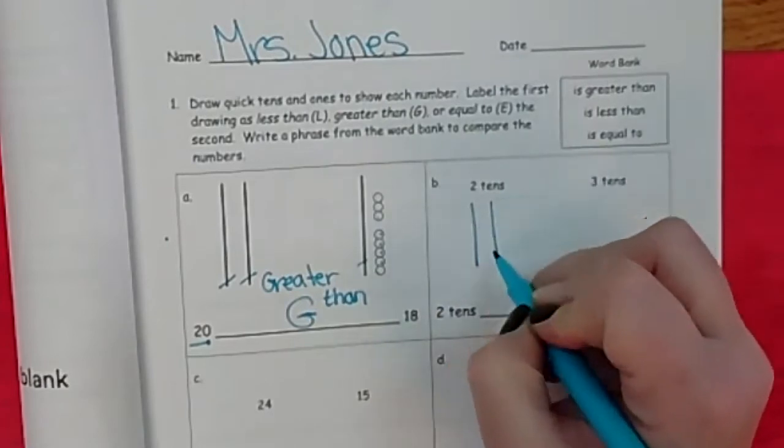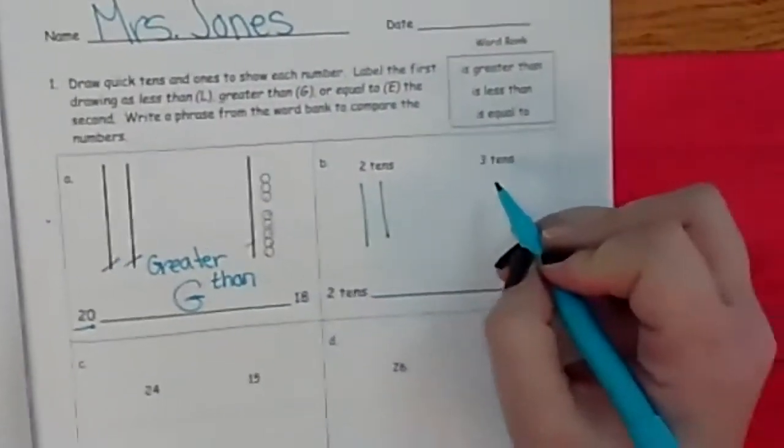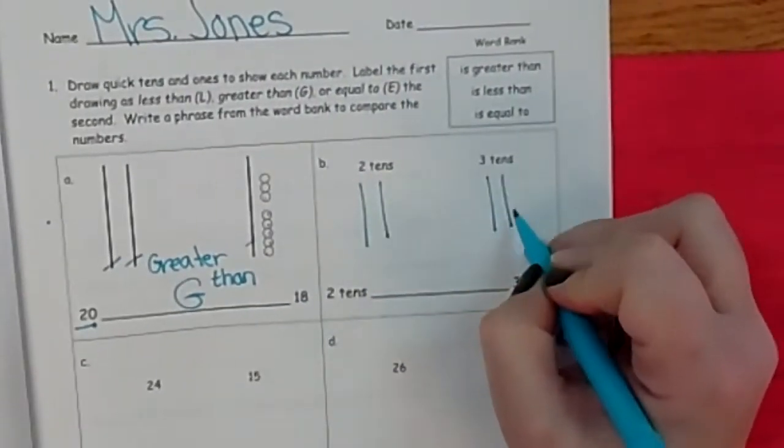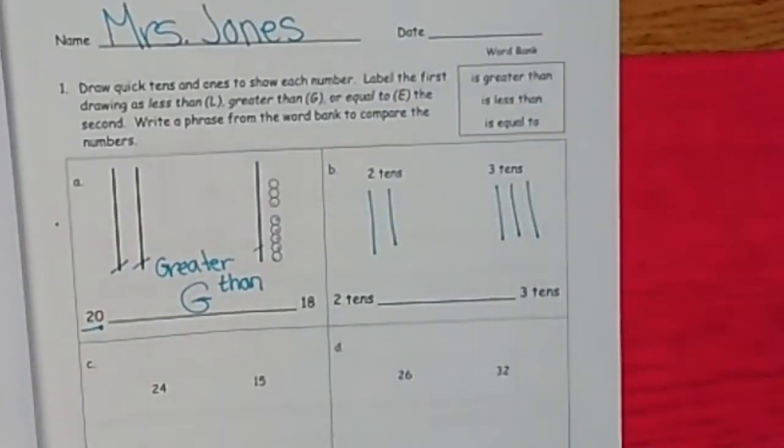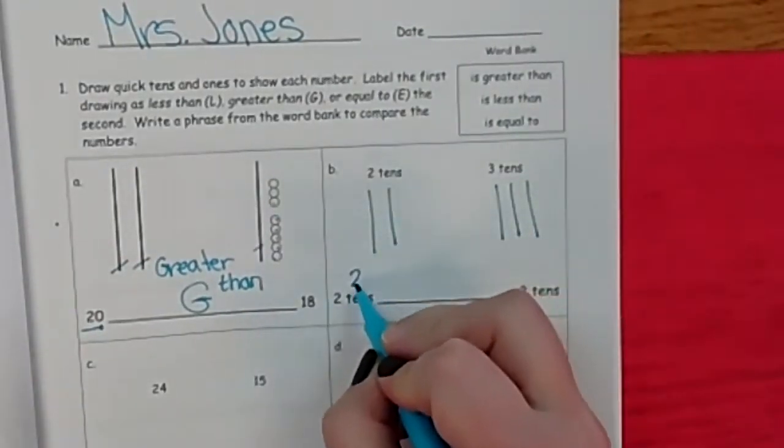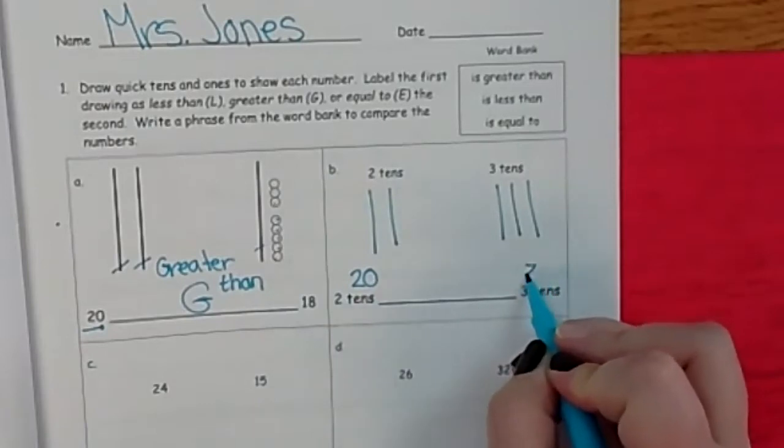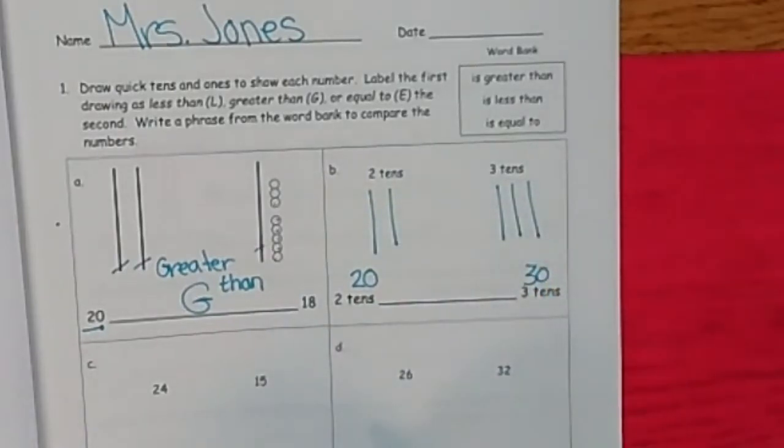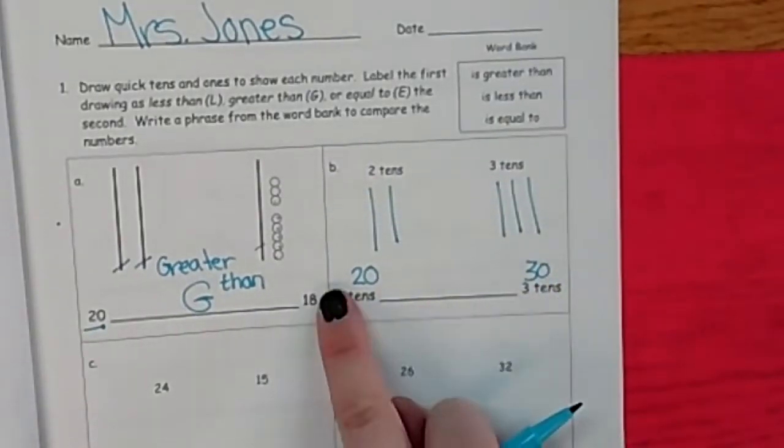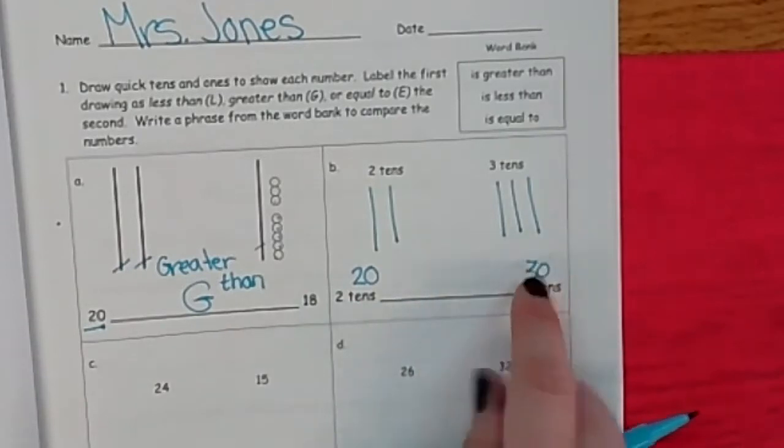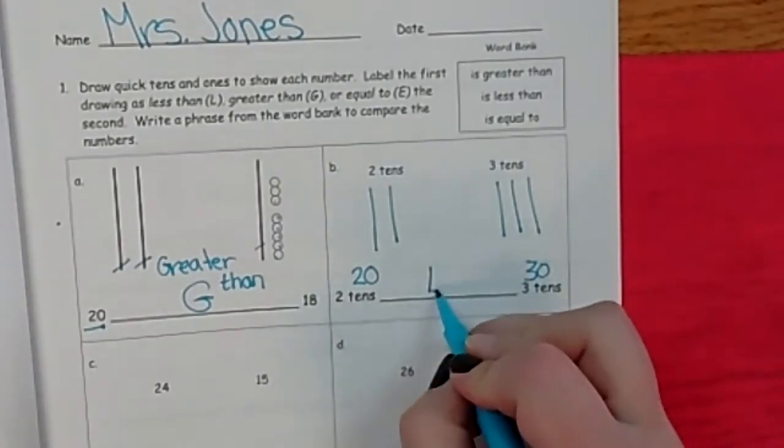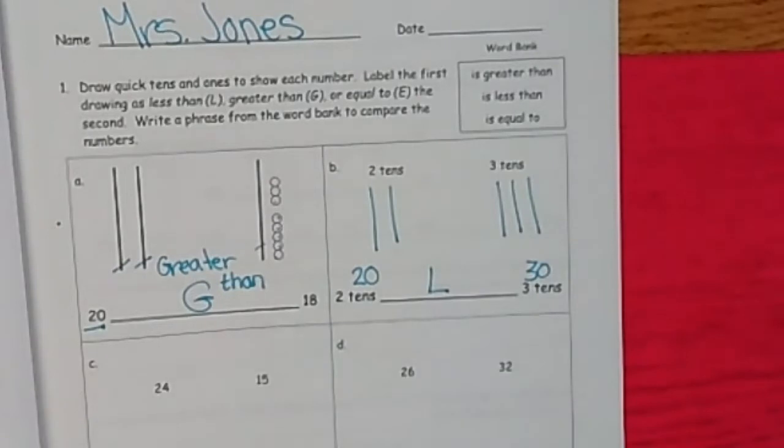Now we need to write two tens. Okay. One, two, 10, 20. Now we need to do three tens. 10, 20, 30. Oh, three sticks. Okay. 20, here's what it looks like, is blank 30. All right. Who's greater? This one is. So 20 is less than, L for less than 30. You're rocking it.